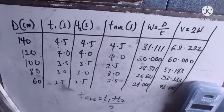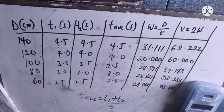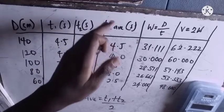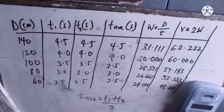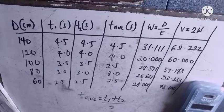Now if you look at this table after you have done your practicals, you can see that you have distance, t1, t2, t-average, w equals d over t, then v equals 2w.